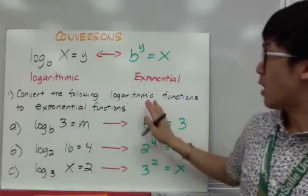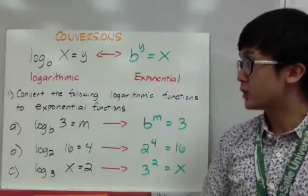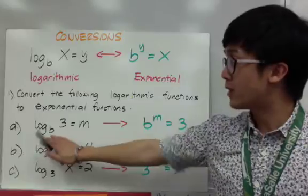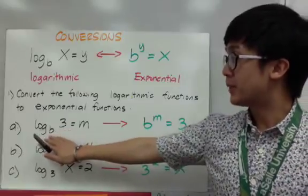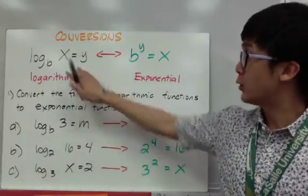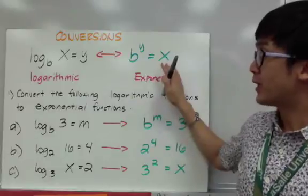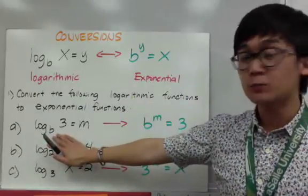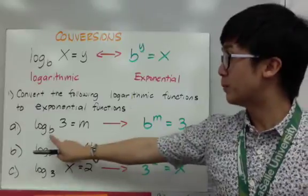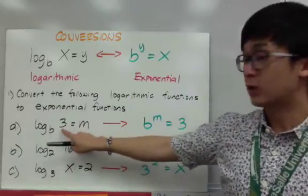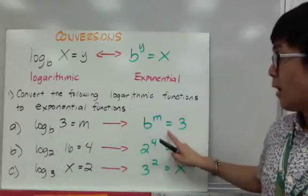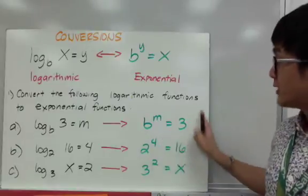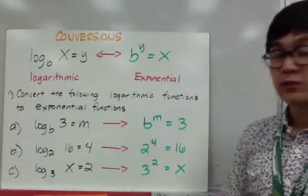To convert the following logarithmic functions to exponential functions — for letter a, we have logarithm of 3 base b equal to m. Using this formula, we can change this logarithmic function into an exponential function, and it will be b raised to m equal to 3. This is now the new exponential form of the original logarithmic function.